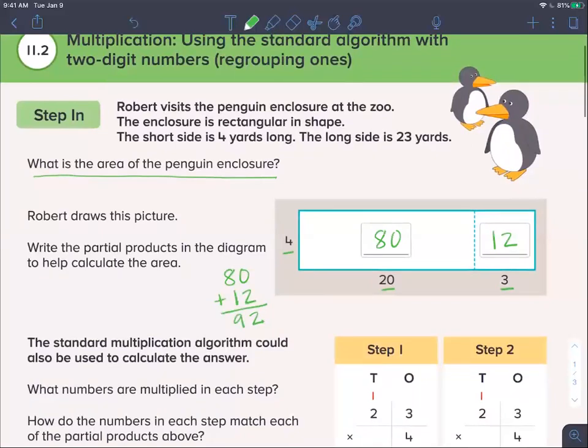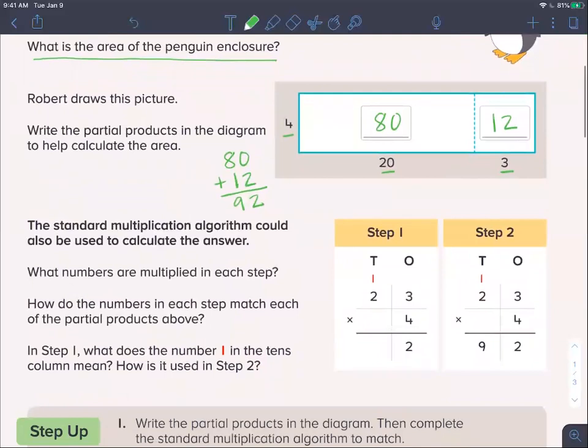Let's come down here. They're showing you step 1 and step 2 of the standard algorithm. They're just splitting up the steps. Normally we would just show all of our work once like that. They do 3 times 4 is 12, and you do have to regroup right up here. Then 2 times 4 is 8. Add the 1 and you get the 9. You can tell 92 there, and we also had gotten 92 using partial products.